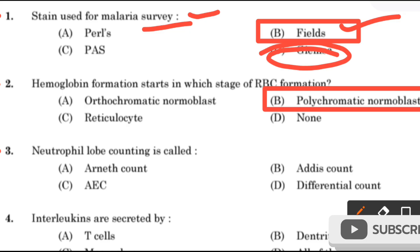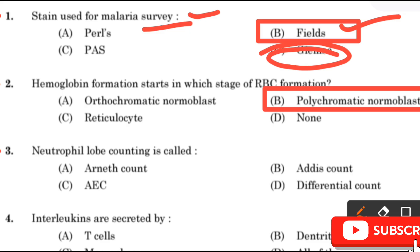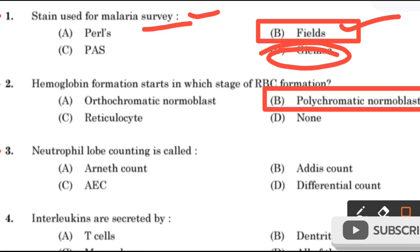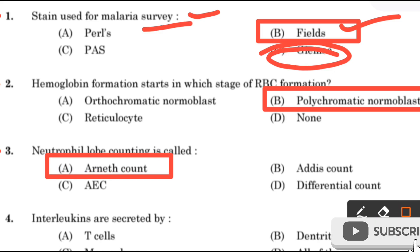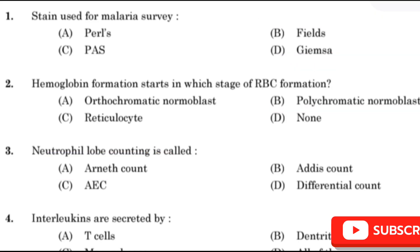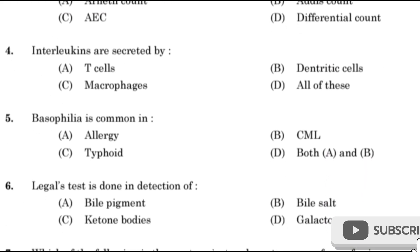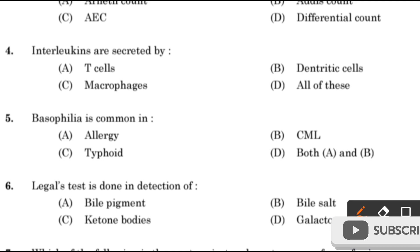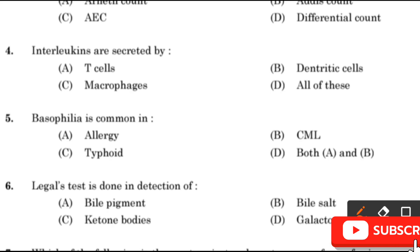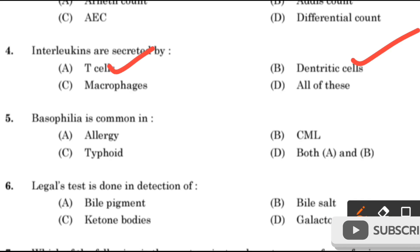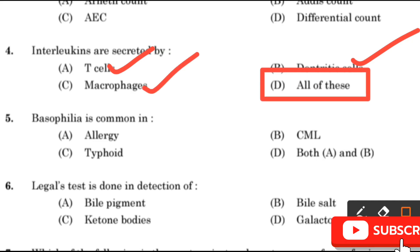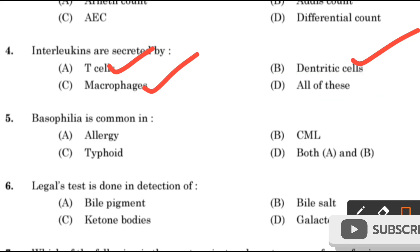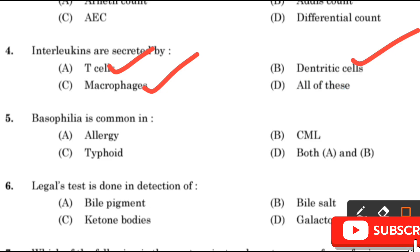Question number 3: Neutrophil lobe counting is called — Arnath count, Hadis count, AEC differential count? Neutrophil lobe counting is called Arnath count. Next question: Interleukins are secreted by — T cells, Dendroids, Macrophages? The right answer is all of these.